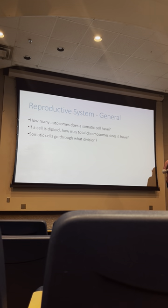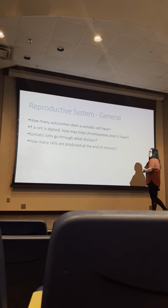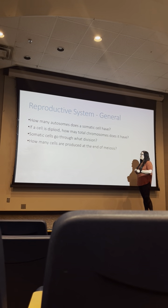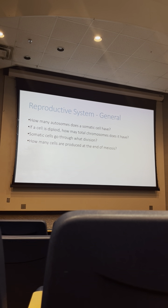If we are a somatic cell, what sort of division do we go through? Mitosis. If I'm somatic, I go through mitosis. Meiosis is just for sex cells. At the end of meiosis, how many daughter cells do we have? Four — two produced at the end of meiosis I, and two at the end of meiosis II.